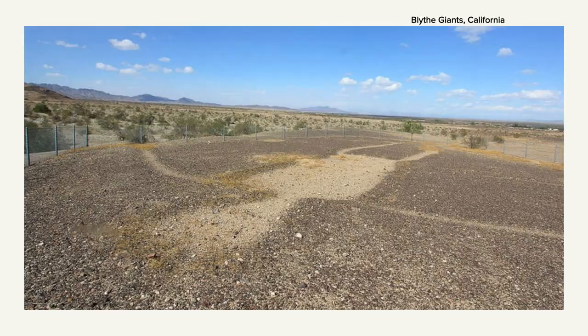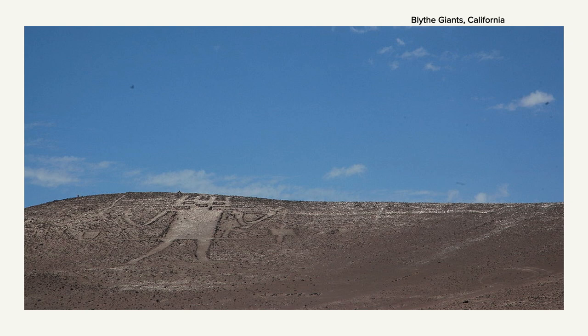The Blythe Giants is a series of geoglyphs you can see today in California. If you look at the lighter-colored dirt on the ground, it actually forms a human figure. Here's another angle of the Blythe Giants — you can see the humanoid figure carved into the side of this hill. It's huge. We have no idea why they made it; we don't know if it was meant to represent a god — that's always the assumption — but it could just be an image they thought looked cool.